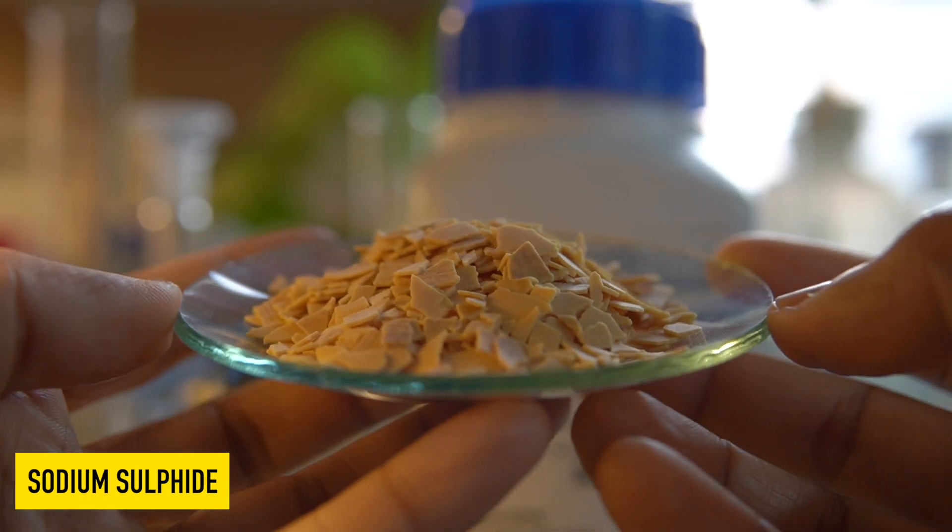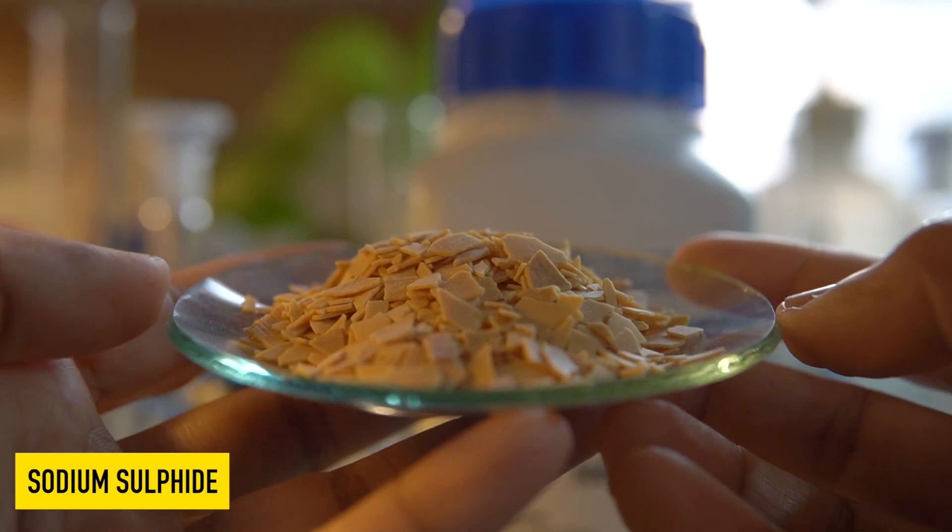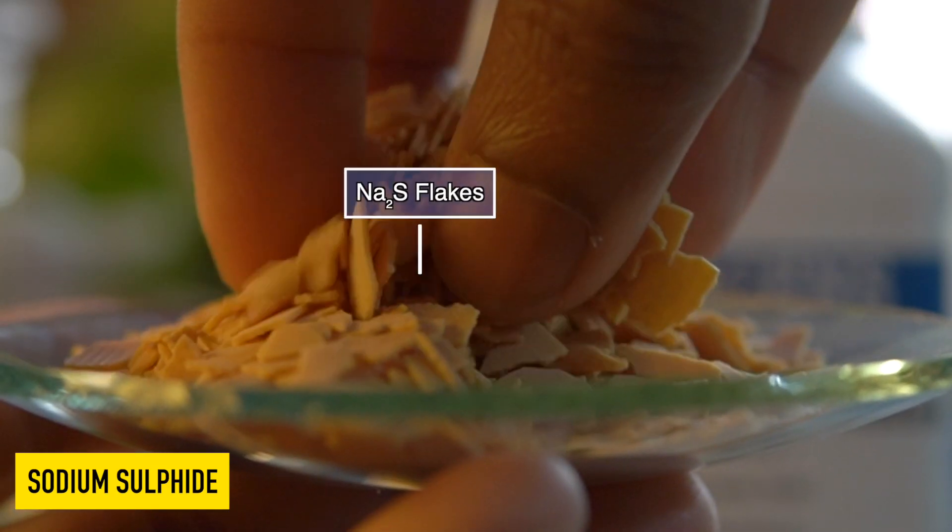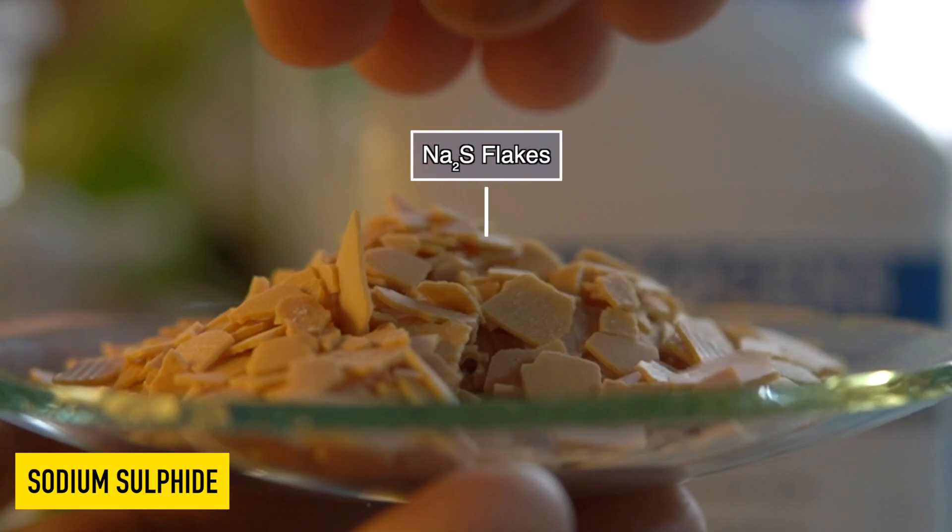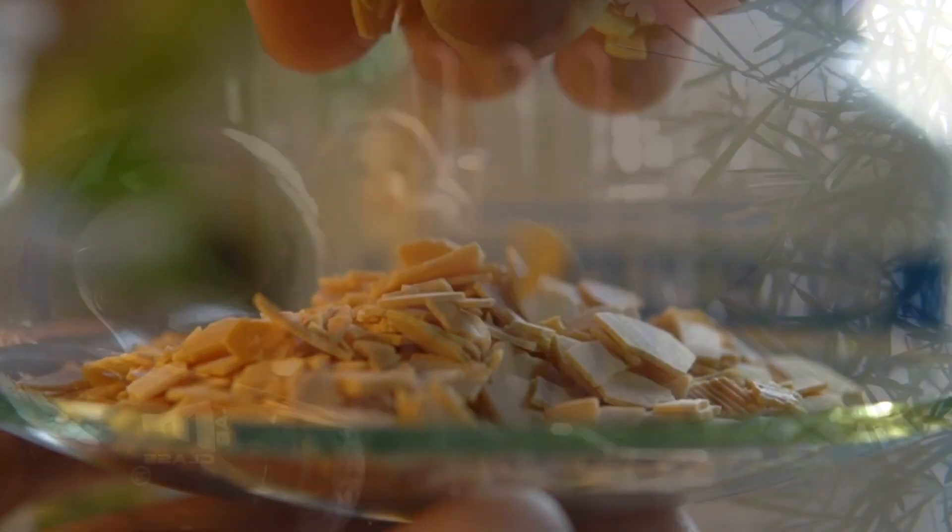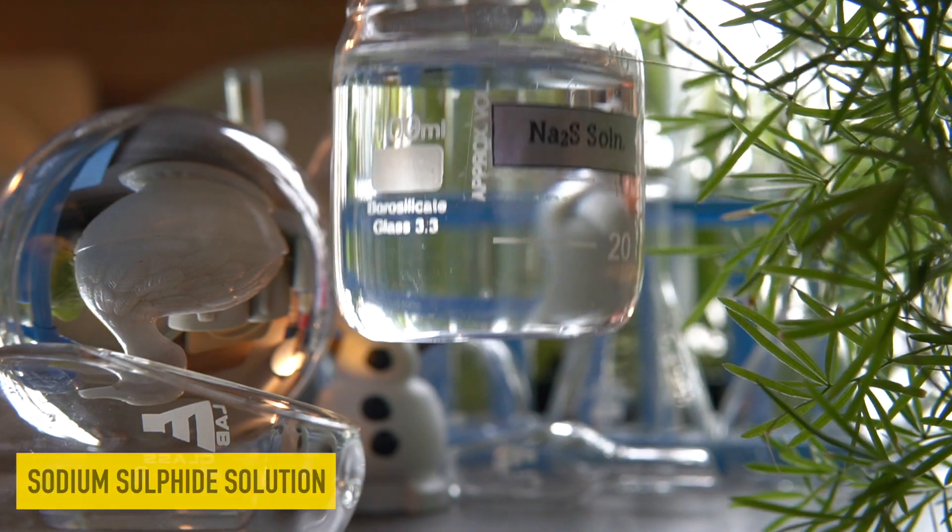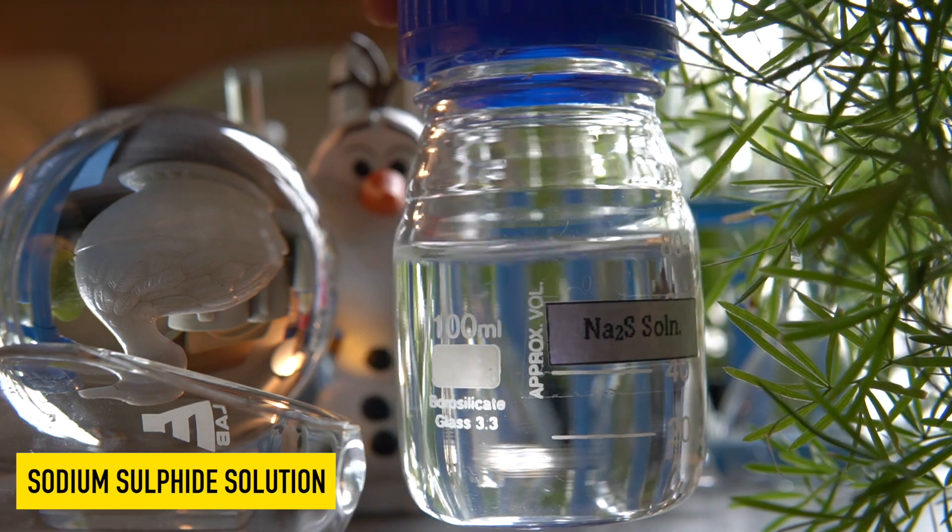These are sodium sulphide flakes. They are slightly yellowish in color and highly soluble in water. They can easily dissolve in water to make a clear colorless solution.